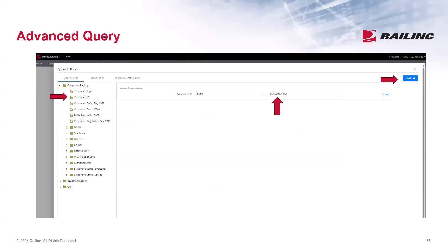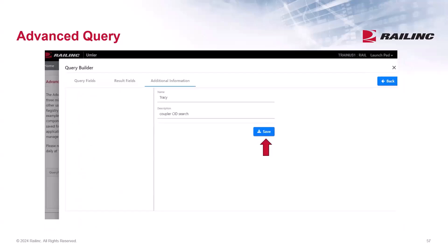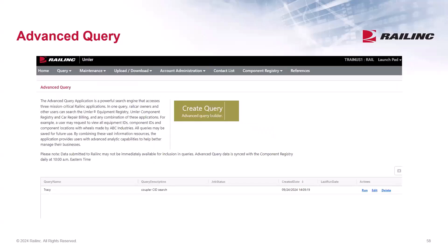In this example, I have a component ID and I want to know if it's associated to a piece of equipment. So on the left, I'll search by the component ID and then enter the component value. Click Next at the top of the screen. Here you can select the result fields you want to see — check the box at the top to include the query fields you want returned. I've selected the component ID and the equipment ID, and then click Next. On the last page of the query builder, you must enter your name and a brief description, which is optional, and then press Save. You will return to the main advanced query screen where you can select to run, edit, or delete the query.